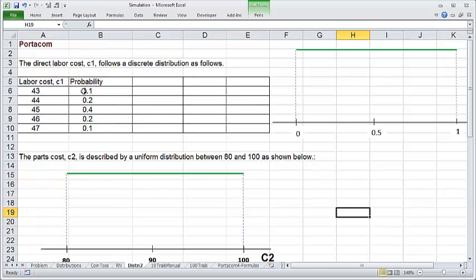This is kind of like the coin toss problem. In the coin toss problem, we have two possible outcomes, heads and tails, each with probability of 0.5. Here the difference is we have five possible outcomes instead of two. But we could use a similar method to generate the values for the labor cost. We could assign specific intervals to the possible labor costs according to their probabilities.